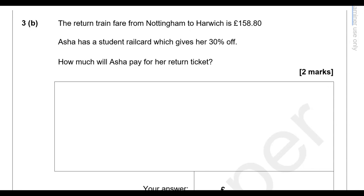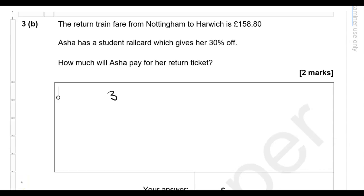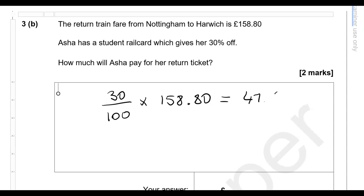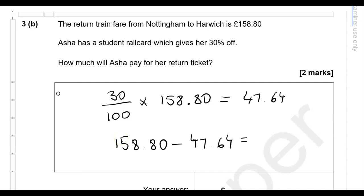The return train fare from Nottingham to Harwich is £158.80. Asha has a student railcard which gives her 30% off. To calculate: 30 divided by 100 times 158.80 gives a discount of £47.64. So Asha will pay £158.80 minus £47.64, which is £111.16.